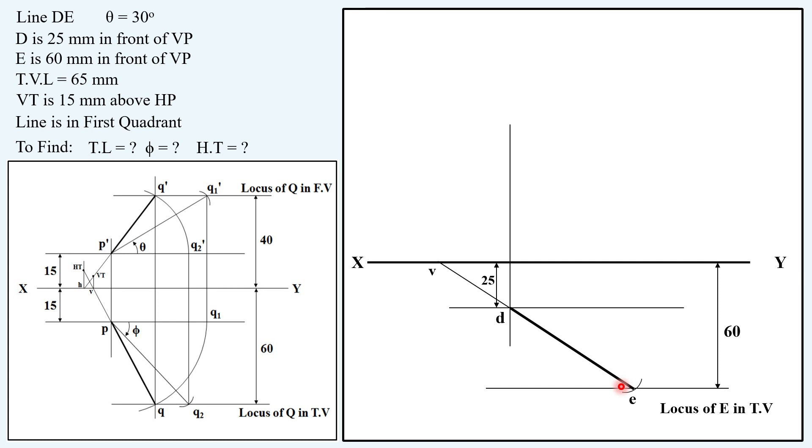Because extending top view meeting XY line gives us V. From that, we have to take 15 mm above from the XY line, drawing a locus on which VT will be located. From V, if you draw a vertical projector intersecting with this locus, you will obtain a point. That is vertical trace VT as given in the question.